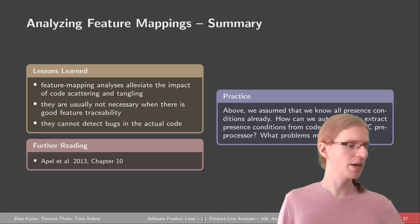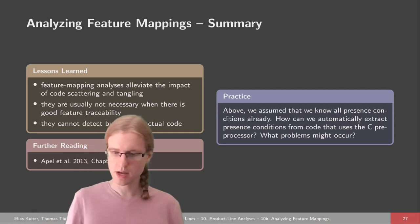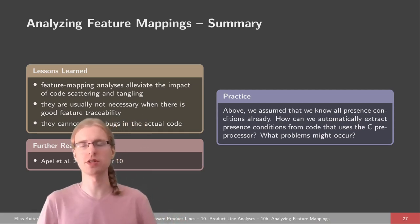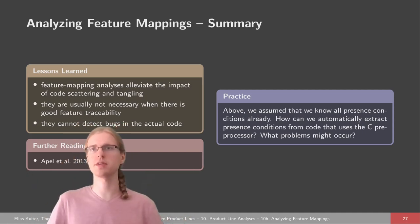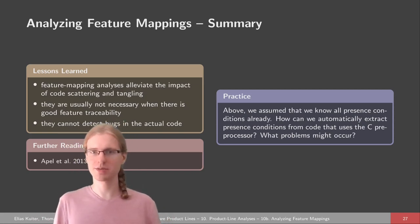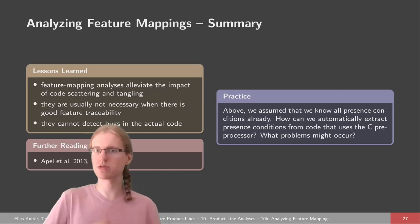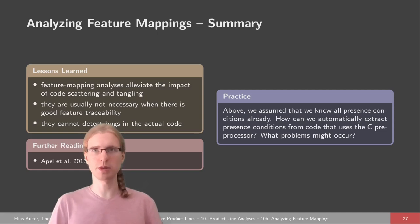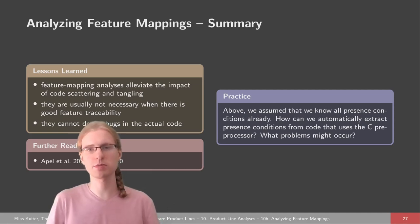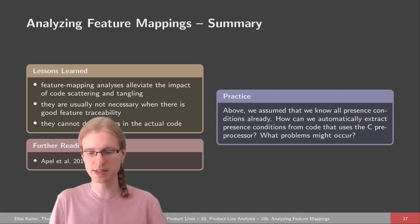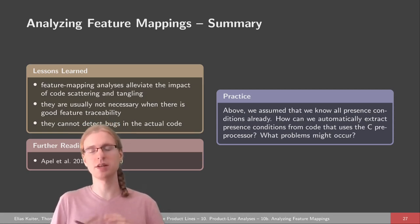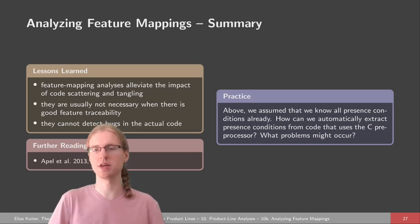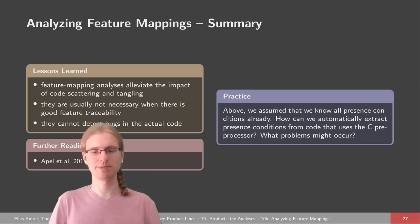To summarize: by performing feature mapping analysis and determining presence conditions, you can improve upon code scattering and tangling problems. These analyses help build tooling support that tells us where code is scattered and tangled, so we can clean it up. Feature mapping analysis is less necessary when you have good feature traceability. A limitation is that these analyses cannot detect actual logic bugs in the code — that's something we'll look at in the next part. For a practical task, think about how to automatically extract presence conditions from C preprocessor code, what problems might occur, and how to extract them for build systems like kbuild make files.